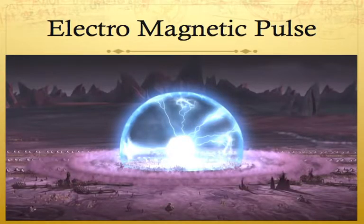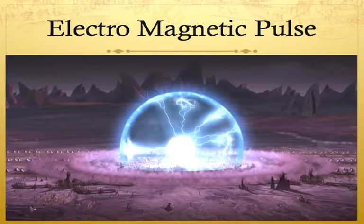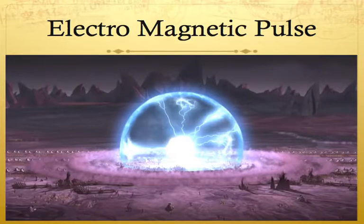EMP stands for electromagnetic pulse. It is basically a very powerful and intense pulse of electromagnetic radiation. If this pulse is powerful enough, it can fry the wiring in circuitry, and in a strong enough magnetic field, electronics can be completely destroyed by the burst.